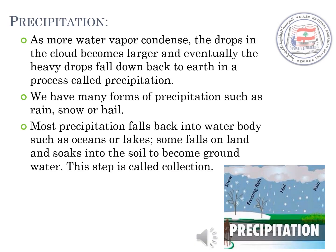Precipitation. As more water vapor condenses, the drops in the cloud become larger, and eventually the heavy drops fall back to Earth in a process called precipitation. We have many forms of precipitation such as rain, snow, or hail. Most precipitation falls back into water bodies such as oceans or lakes. Some falls on the land and soaks into the soil to become groundwater. This step is called collection.